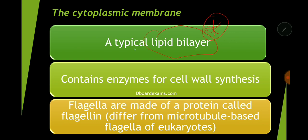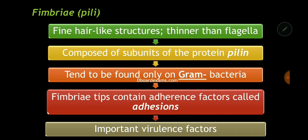The cytoplasmic membrane contains enzymes for cell wall synthesis. Flagella are made of a protein called flagellin, which is different from the flagella of eukaryotes — eukaryotic flagella have microtubules. Those are differences you're supposed to know. The flagella of bacteria — the singular is pilus — they are very important virulence factors for bacteria. Virulence means how well a microbe is able to affect or infect the host.